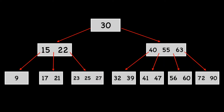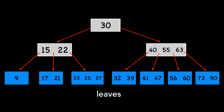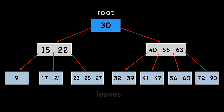Here's a simple B-tree. In our examples, the actual data we're storing, or satellite information, is stored alongside its key, but we'll remove it here to keep the visualization simple. B-trees have internal nodes, leaf nodes, and a special internal node called the root.